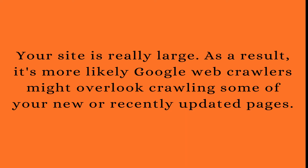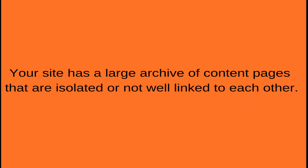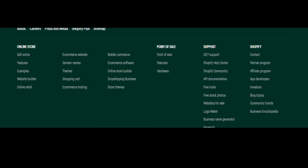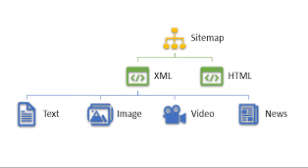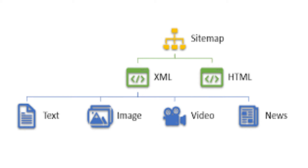If your Shopify pages are properly linked, Google can usually discover most of your site. Proper linking means that all pages you deem important can be reached through some form of navigation — either through your site menu or important pages on the site. A sitemap is important because it helps Google crawl your pages, your products, and the entire Shopify store depending on the rules you've set in the app we're going to install.